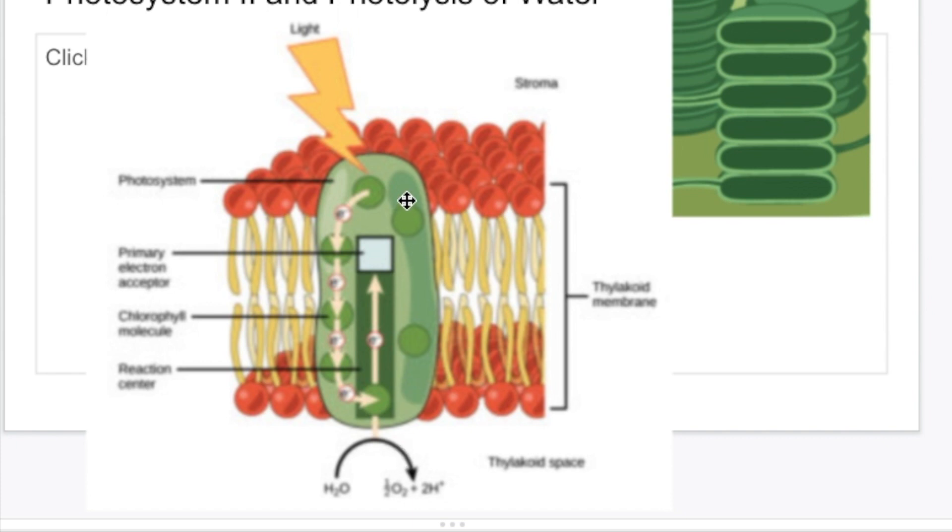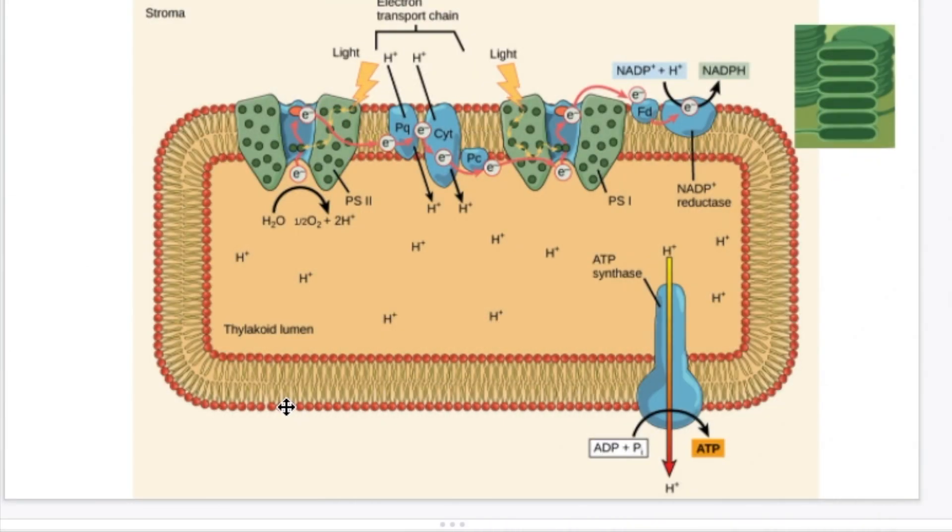But what happens next? Electrons are excited, hydrogen ions are produced, oxygen is produced. How does this lead to the building up of glucose? And the answer to that question comes by considering this diagram. Again, we need some perspective. We are looking here at a single membrane inside of a thylakoid. This is the inside of the thylakoid, the lumen, the space inside of the thylakoid. Outside of it, you've got the fluid-filled, the liquid-filled stroma.